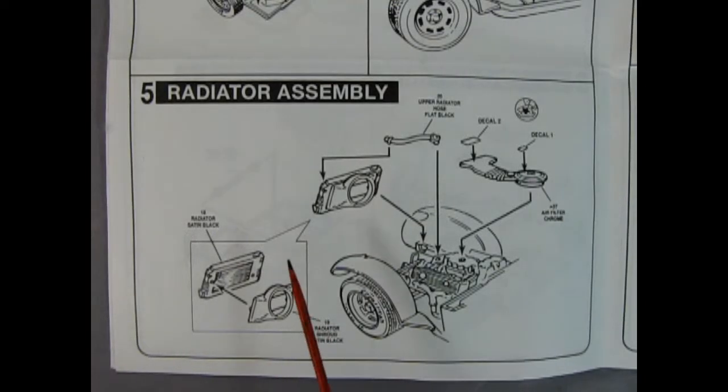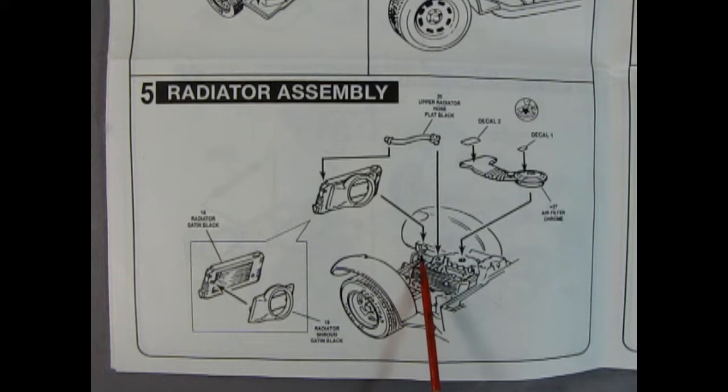Next up we have the radiator assembly and we've got this nice radiator here with the radiator shroud that glues on. This then drops into our front fenders in this notch and then we can attach our upper radiator hose to our radiator and then drop on our air cleaner and air filter.